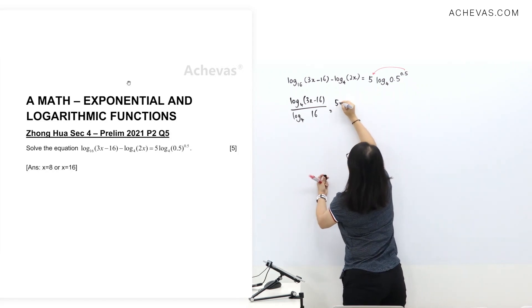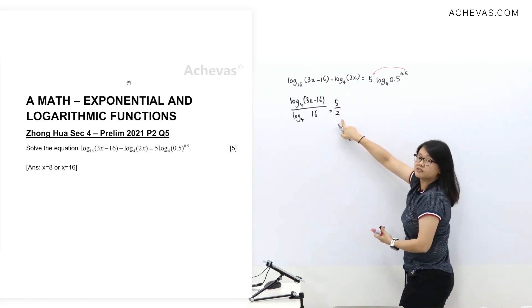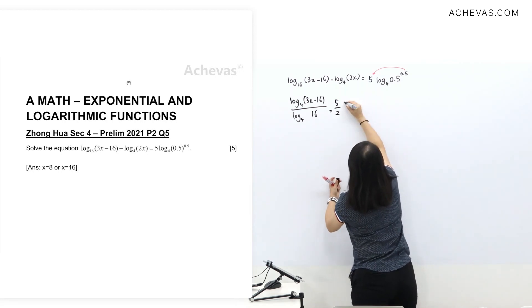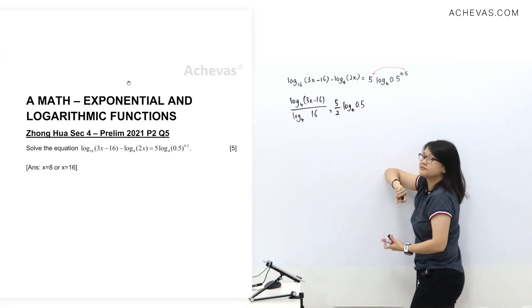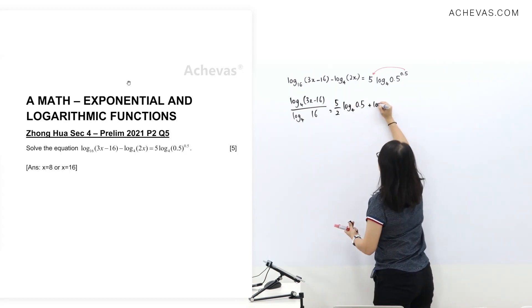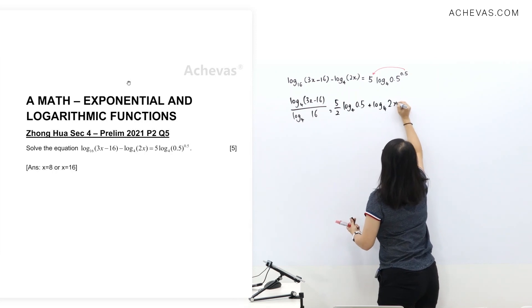Half times 5, I'll give you 5 over 2, right. And I have here log base 4 of 0.5. Moving minus over to add.